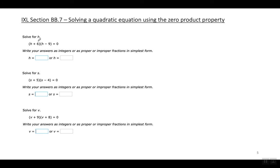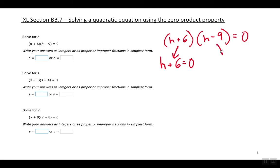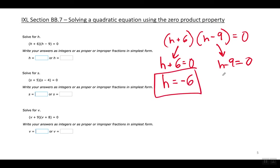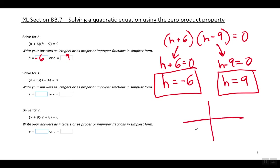Now some slightly different but still easy examples. First: H plus six times H minus nine equals zero. Set each factor equal to zero and solve for H — H equals negative six, and H equals positive nine. What that means is that when you graph this quadratic function, the parabola passes through these points on the X-axis.